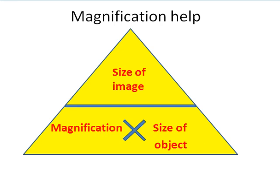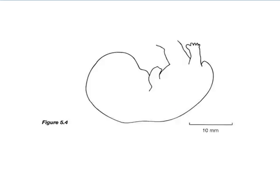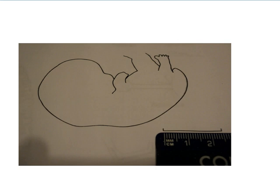Here's our first slide — a little picture of an embryo. We've got a scale bar here, and this says that this length is 10mm. We're going to need to work out the magnification on this one. We've got a ruler, so we can measure the size of the embryo if we put our ruler up against the image. And that measures 25mm.